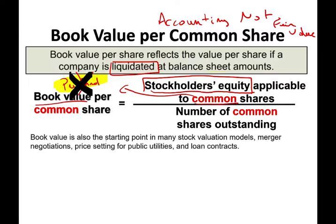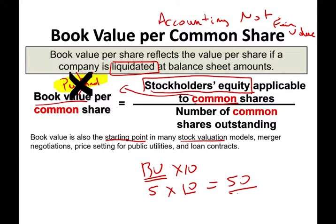The book value is a starting point in many stock valuations. When we are valuing a company to see how much it's worth, the first thing we look at is the book value. Then based on the book value, we can say that in this industry we should value the stock at 10 times the book value. So if the book value is $5 per share, we multiply by 10 and say the stock price should be around $50. This is also used when there's a merger negotiation, price setting for public utilities, and loan contracts — they look at book value as a starting point in the negotiation process.